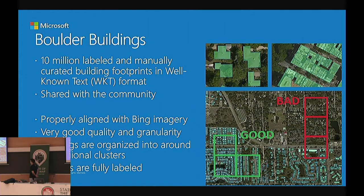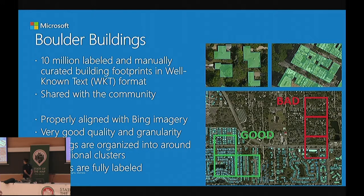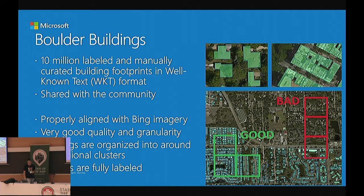Regarding our labels, we use Boulder buildings as our labels. Boulder buildings came into our possession by acquiring a Boulder company that did the mapping — they are of excellent quality. Edges follow building edges on images well, and they are very granular — in larger building clusters each building is separately identifiable. They are very well aligned with Bing imagery, and one of the most important properties for deep learning is that they are organized into fully labeled clusters. They selected around 100 clusters of interest and started labeling systematically in those areas. This is the kind of data we want in deep learning — we don't want sparse data, because all buildings on the images we feed into the deep neural net must be present and recognized.